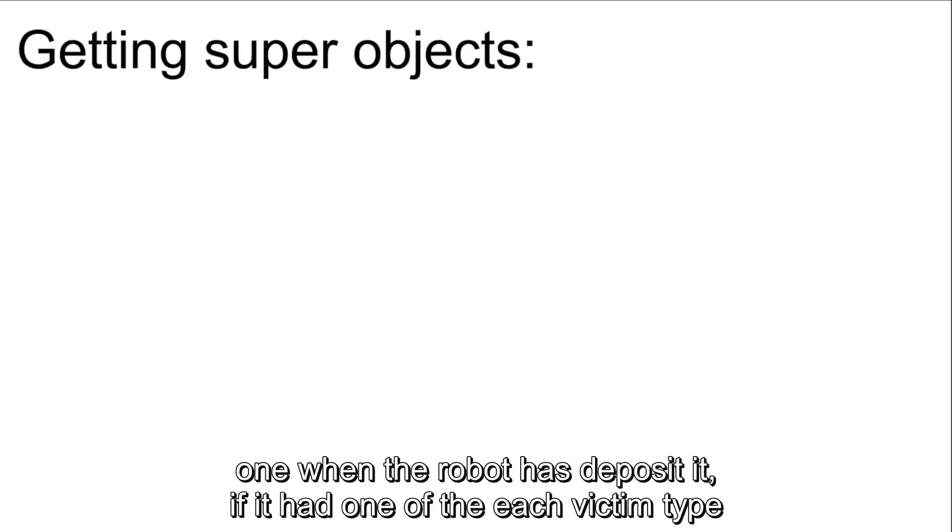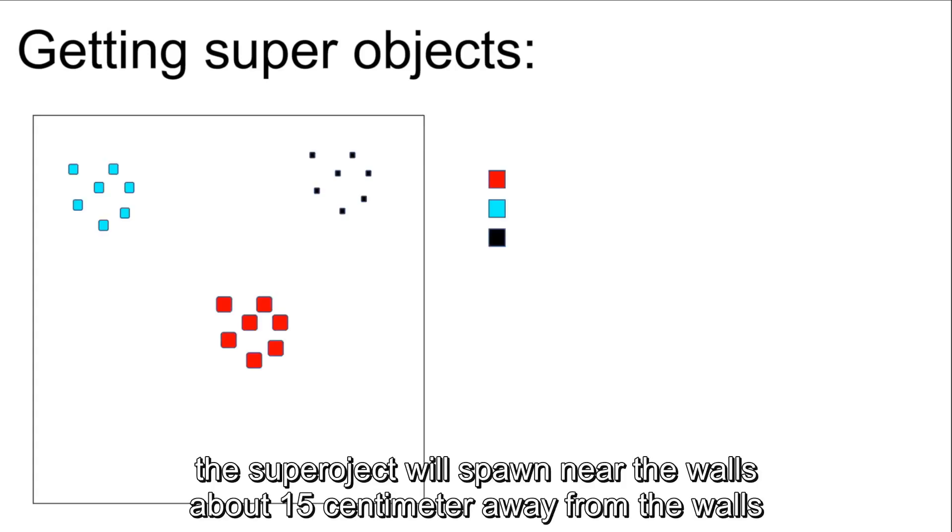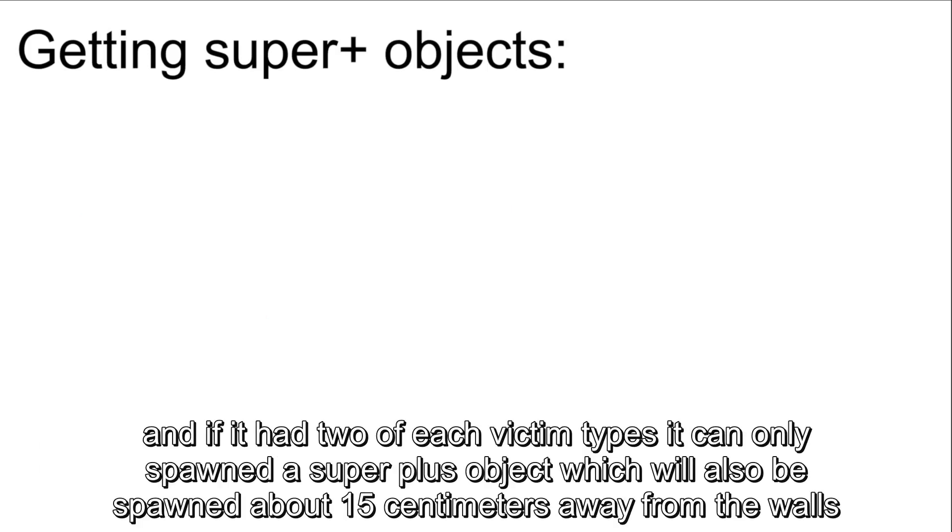When the robot has deposited, if it had one of each victim type, a super object will spawn near the walls, about 15 centimeters away from the walls. And if it had two of each victim type, then it will spawn a super plus object, which will also be spawned about 15 centimeters away from the walls.